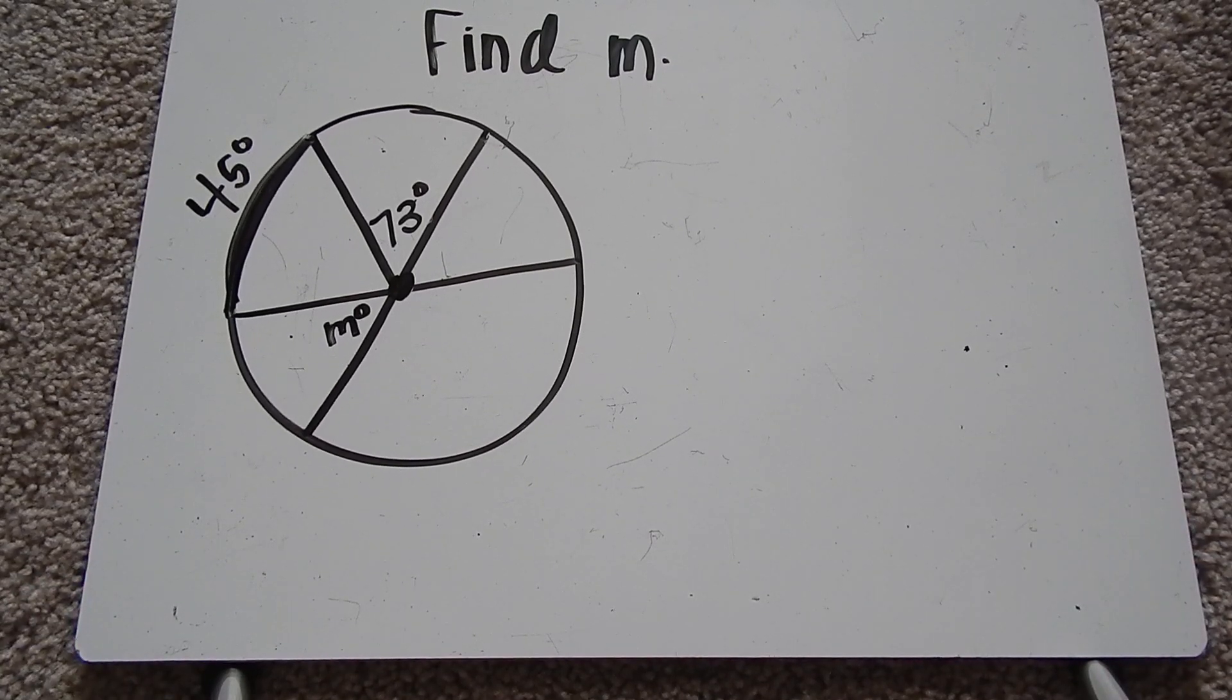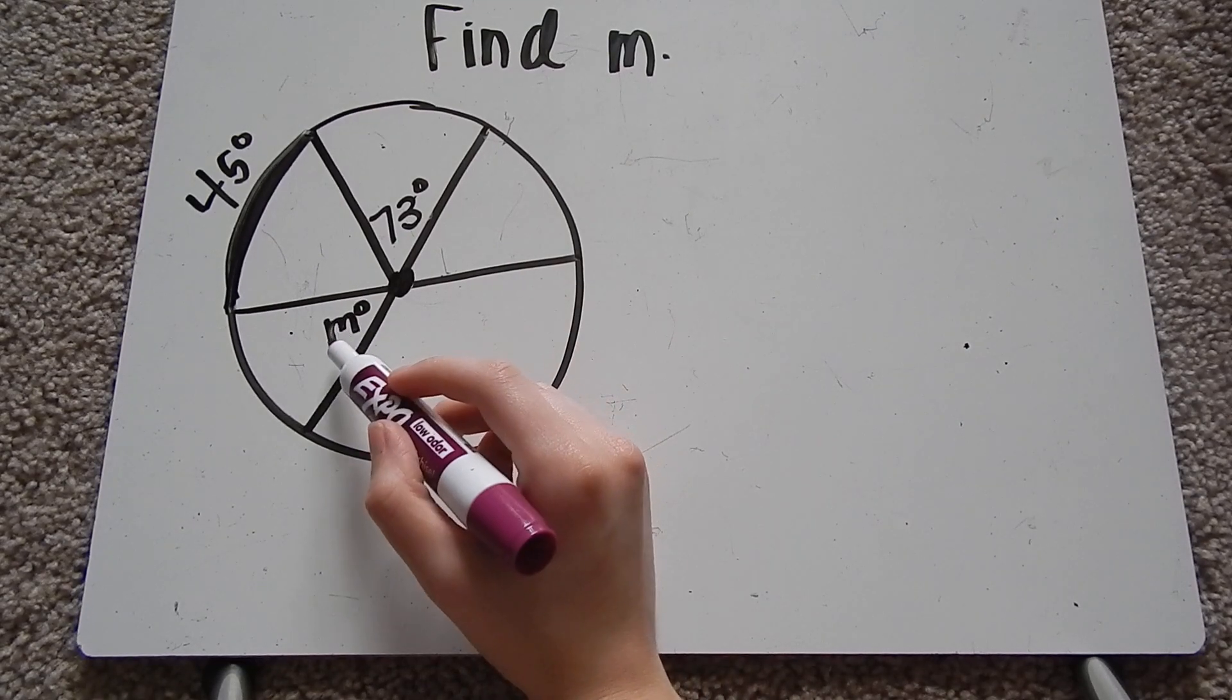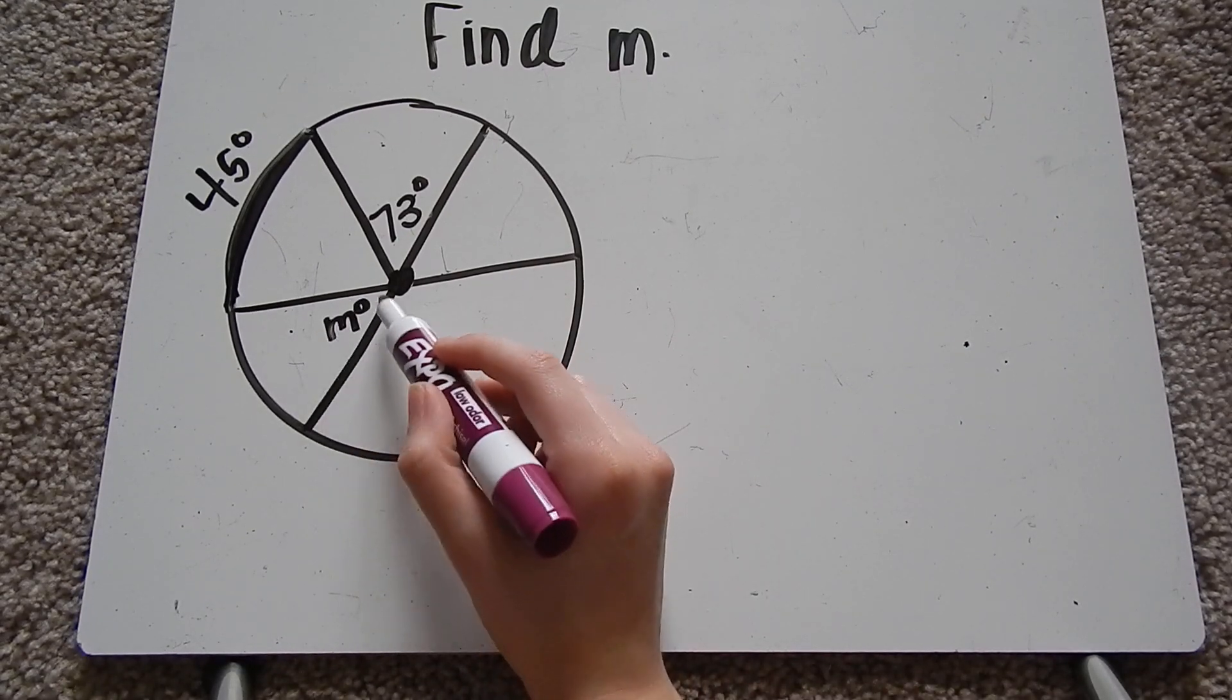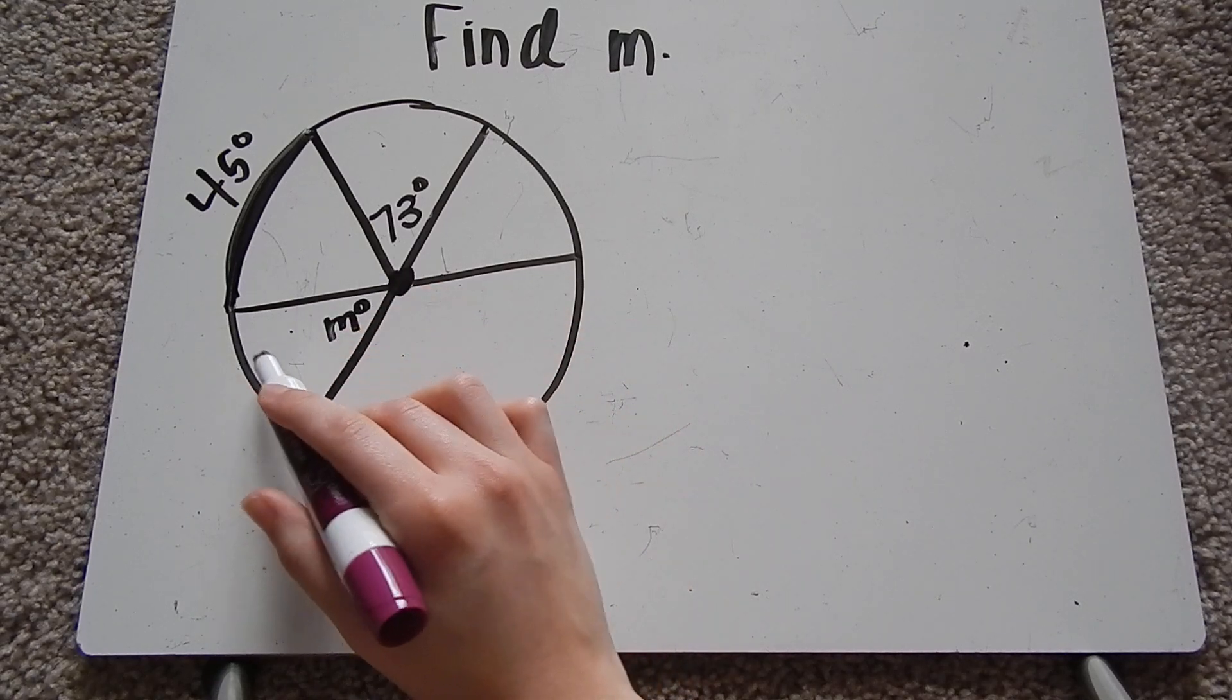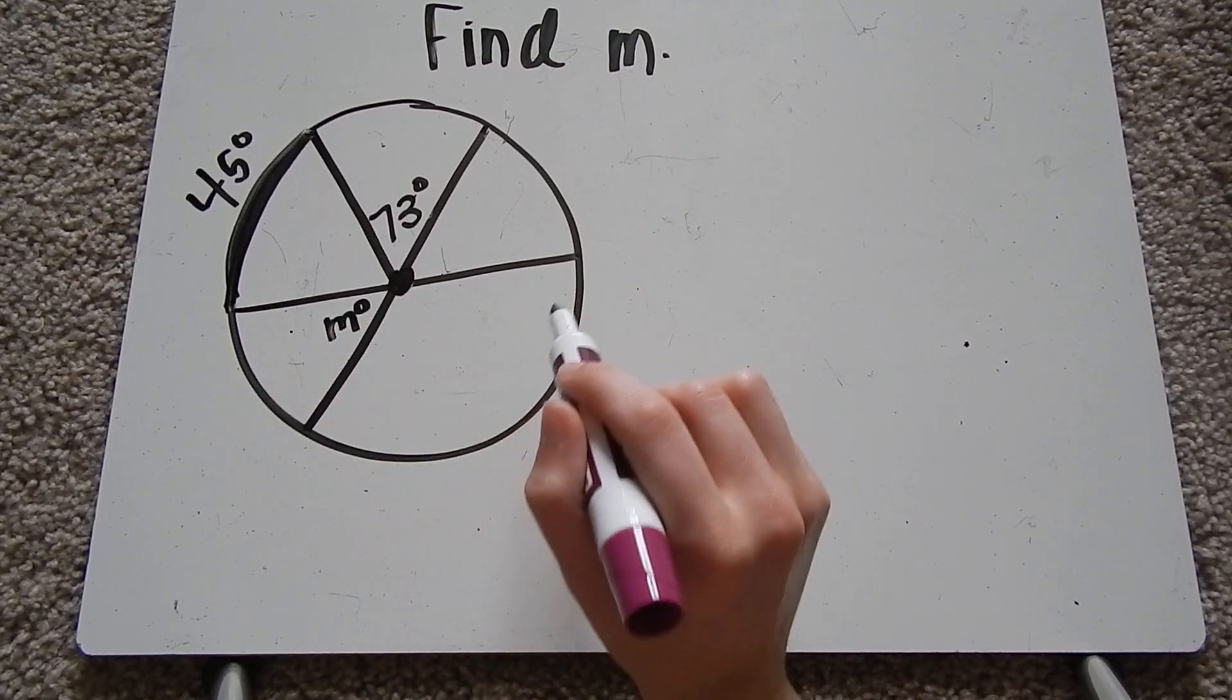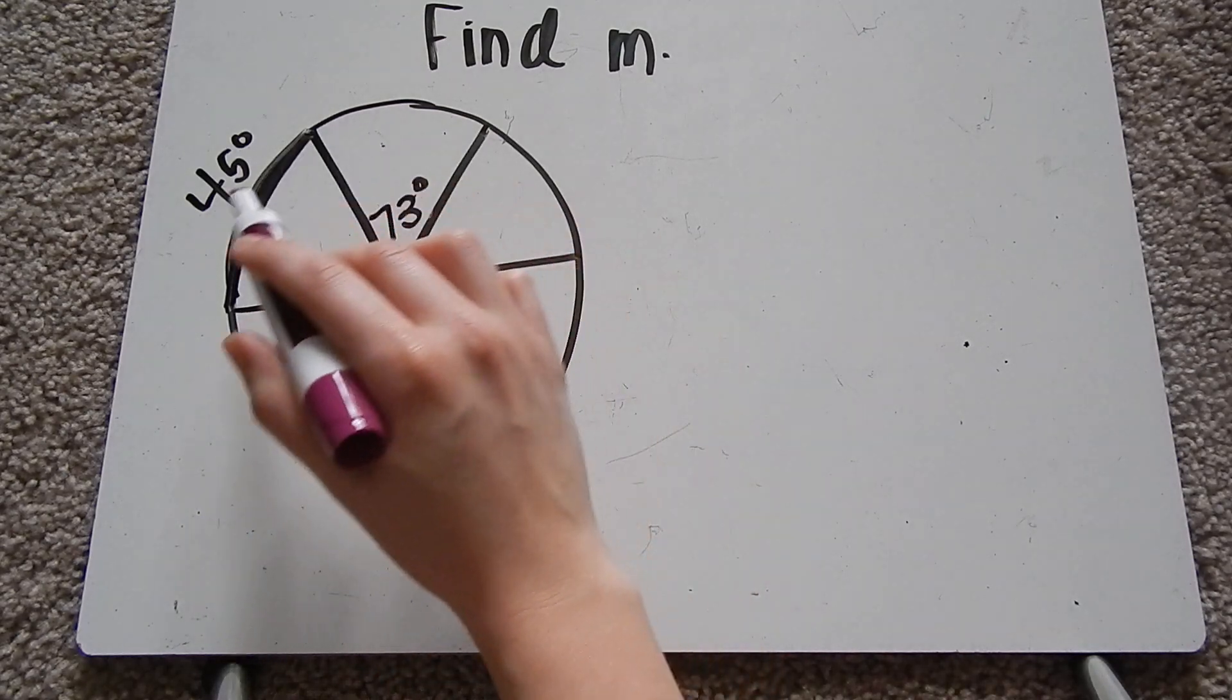We have a bunch of different sections of our circle and this is angle measure m here. This is what I'm trying to find. Now I really don't know anything about this half of the circle. But I do know things about this half of the circle.